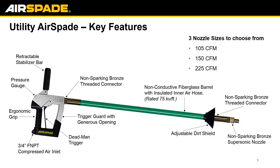Can you go over the nozzles in more depth? It looks like there are three different options. Correct — we have three different nozzle sizes depending on the type of compressor you have available. Our 105 CFM unit will operate off a smaller compressor but is also the least powerful unit. We have a 225 unit that's great in harder soils or clays but requires a much larger compressor. The 150 unit is definitely our most common because it offers great efficiency and power while running off a common 185 compressor, which most people have access to.